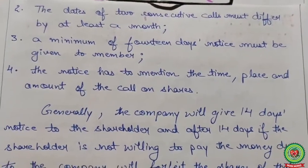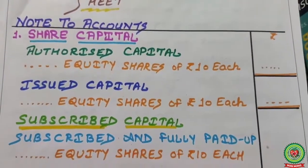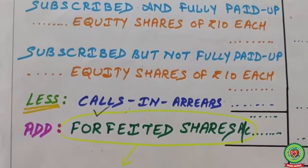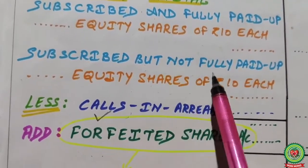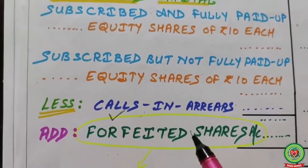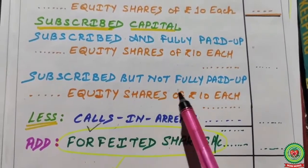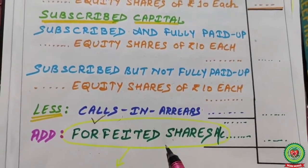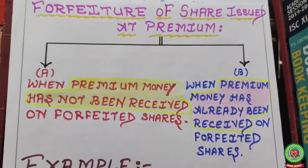How to show forfeited amounts in the balance sheet: under Notes to Accounts, look at Share Capital — under Subscribed Capital, under 'Subscribed but not fully paid,' you will see 'Less: Calls in arrears' and then 'Add: Forfeited Share Account.' The forfeited amount is added to subscribed but not fully paid-up capital.